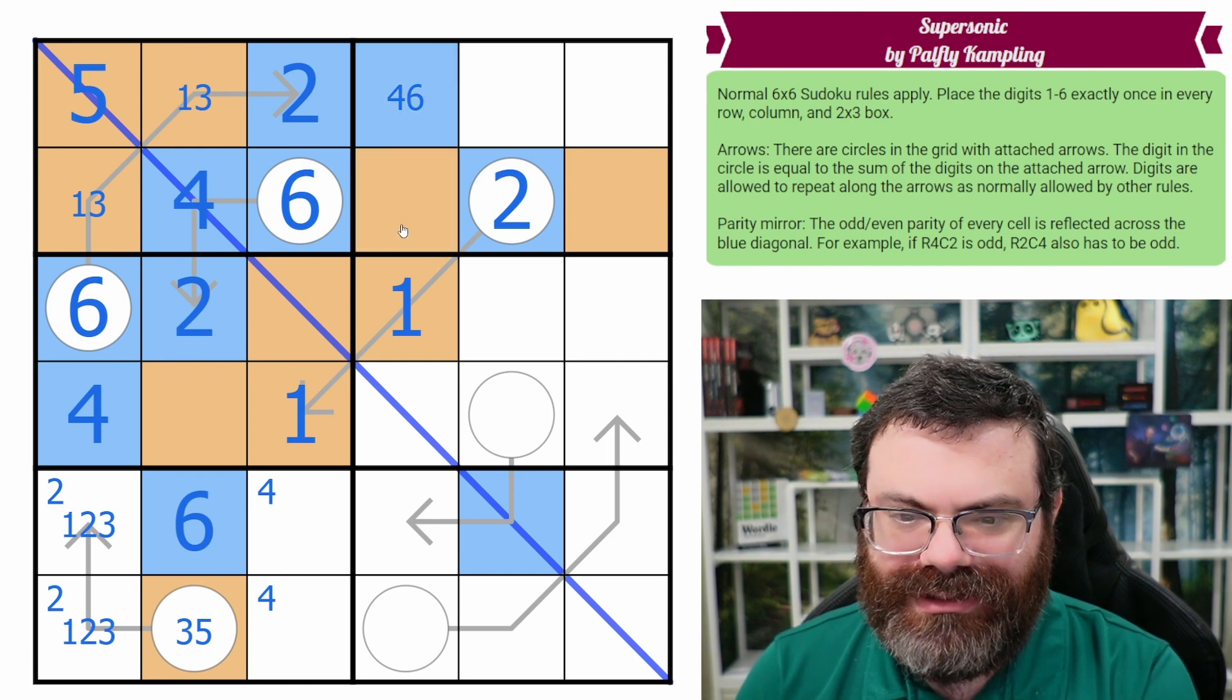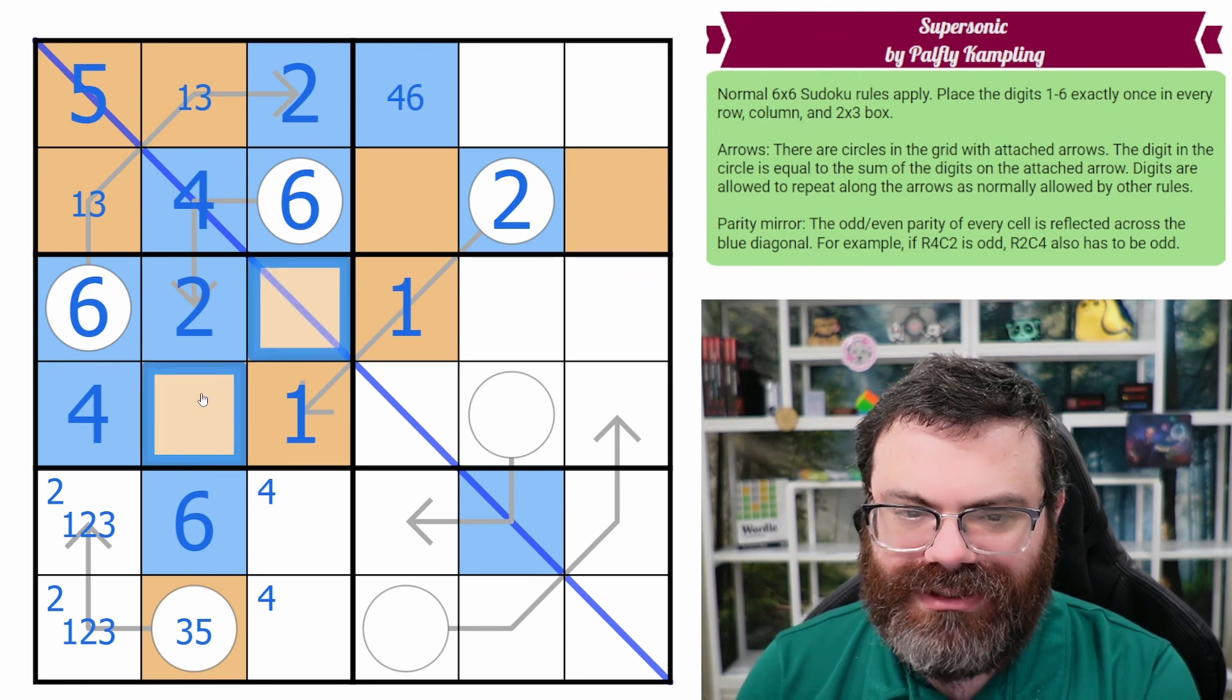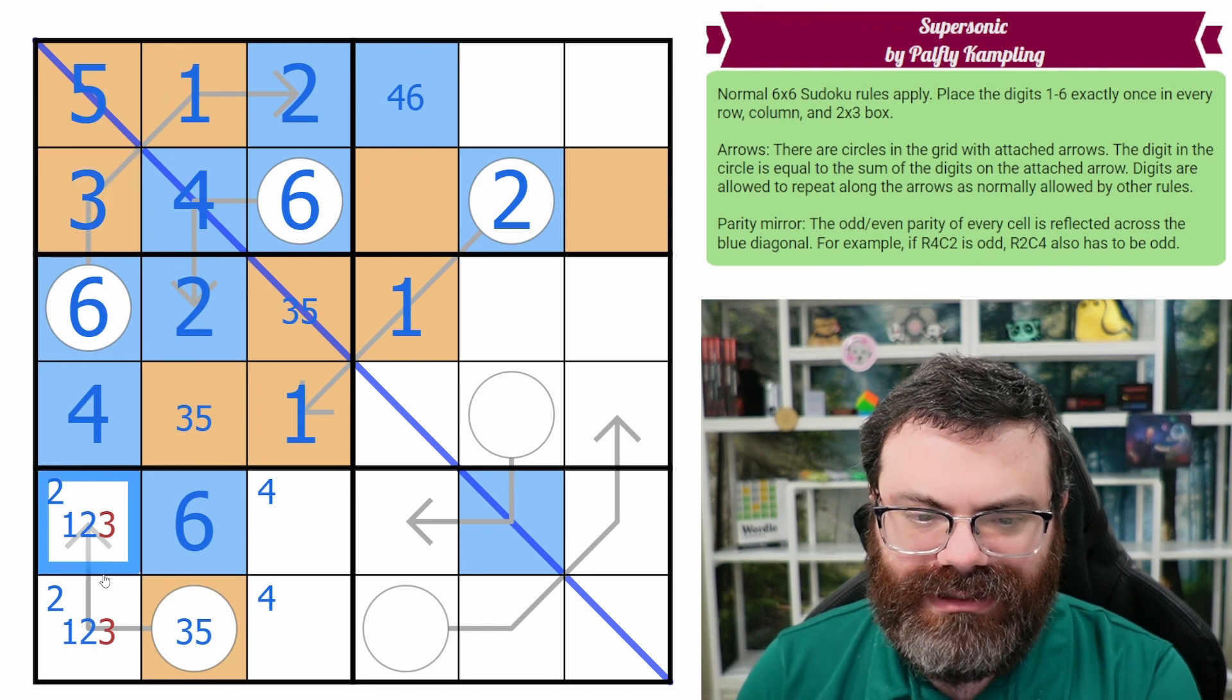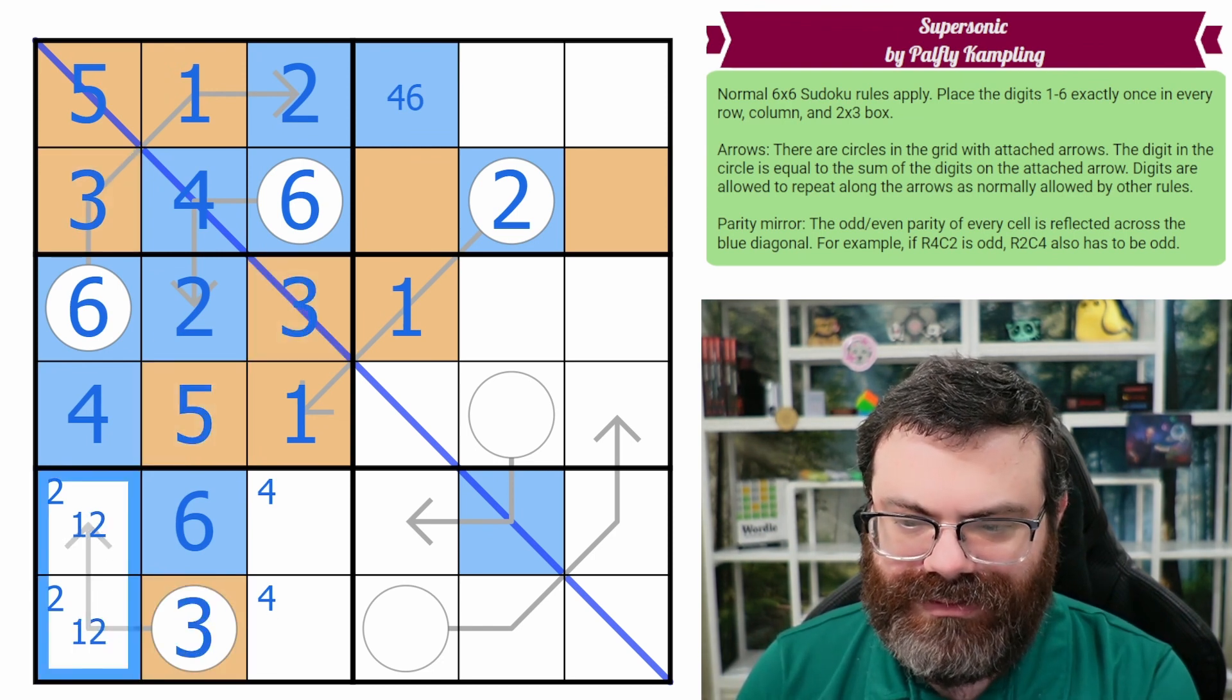So this is four or six only. So these are a three, five pair, which means the one in this column goes here. That's three. This is one plus two is three. That makes that five and three. Nice. Interesting feedback loop there.